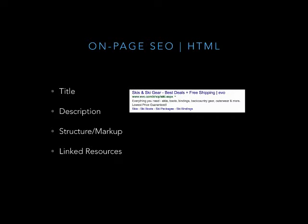Linked resources are another important on-page factor. It's actually good to link out within your content as a credibility factor — like citing your sources, similar to basic journalism. If you're writing about modern snowboard construction, you can link out to other authoritative sources. This is really good when you get into blogs and creating content. For e-commerce, you have to gauge whether it makes sense since you don't want to send people away from your pages, but where you can link out to credible resources, it does help.